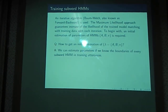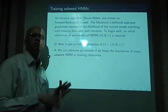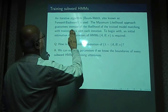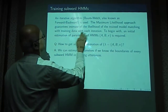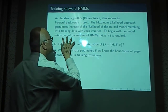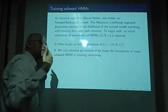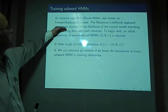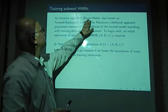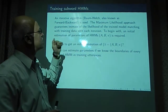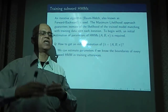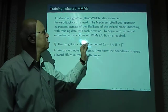We started with training subword HMMs — HMMs which represent a linguistic unit smaller than a word. We use an iterative method for estimating the parameters. This iterative method requires an initial version of the parameters, which can be approximate, but the approximation improves as we iterate. The Baum-Welch algorithm, also known as the forward-backward algorithm, guarantees that the likelihood of the trained model explaining the training data increases with each iteration.